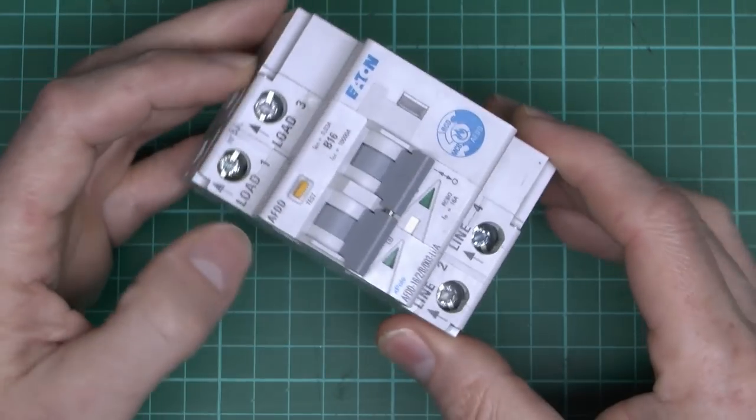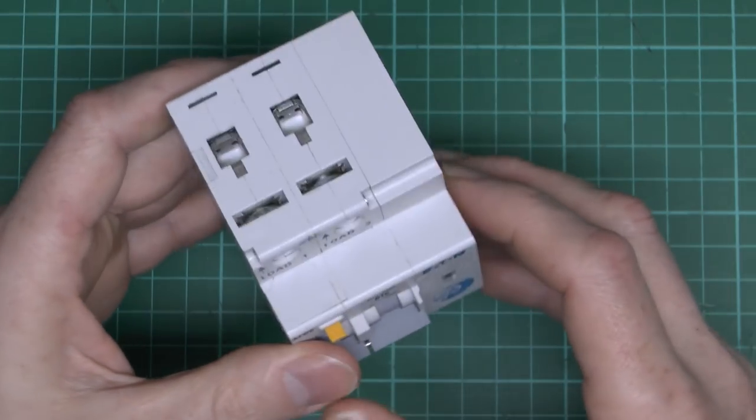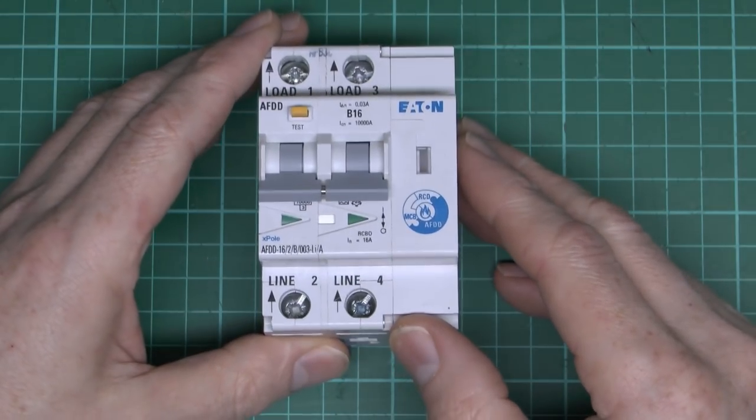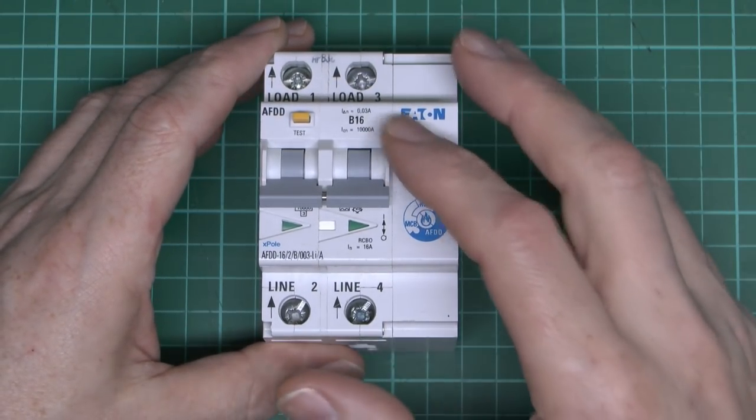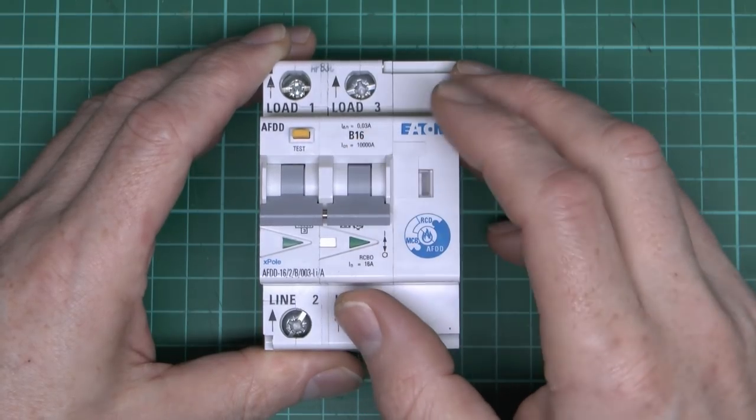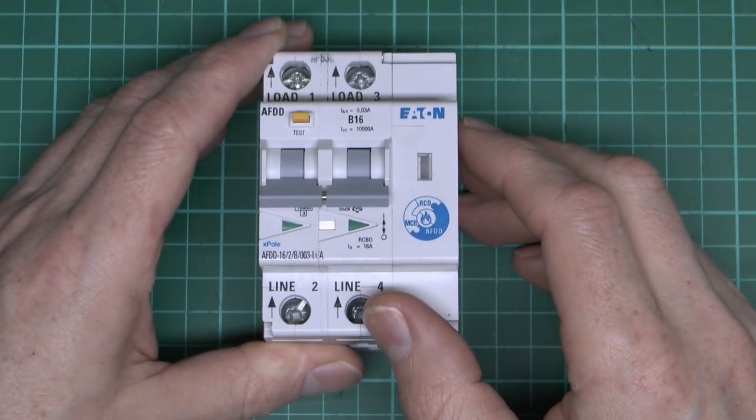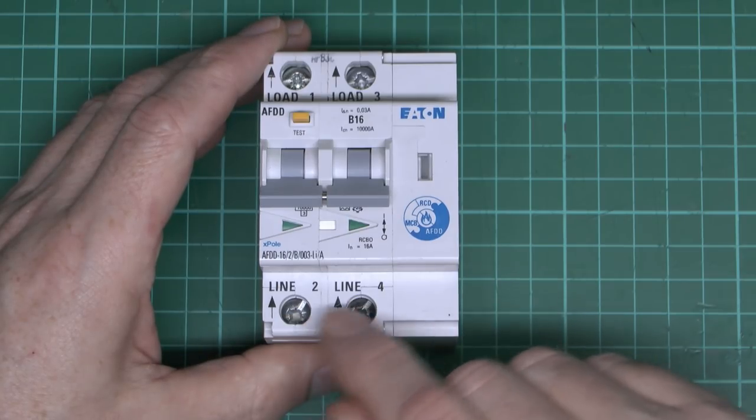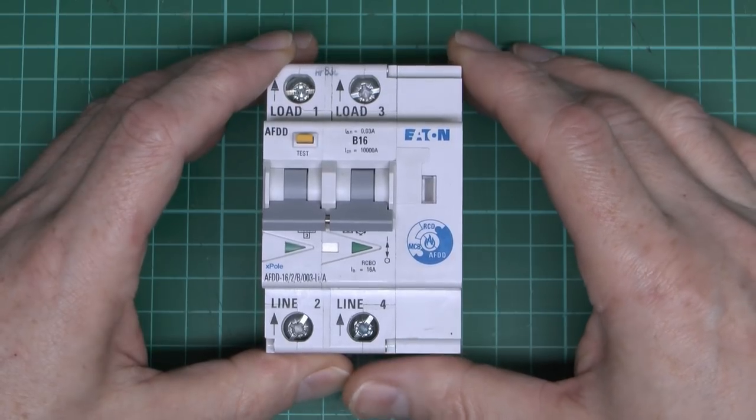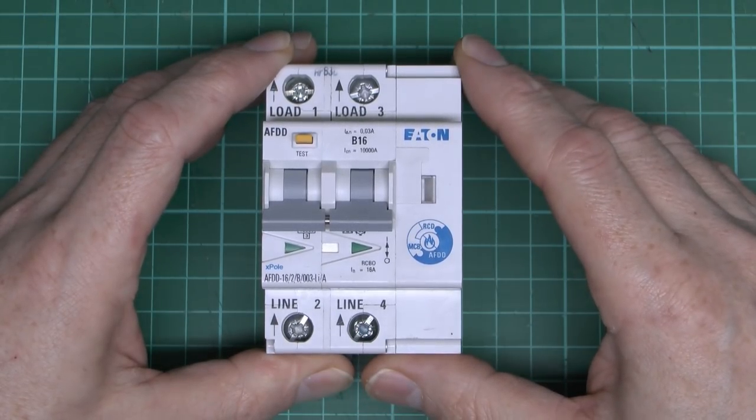Now the first thing about these is it's a very large device, it's a triple width item. It's double pole, but it's basically line and neutral, so a single phase circuit there. So this one we have a 16A device. The RCD current is at 30mA, so again pretty standard there. Just the two terminals at the bottom for the supply, and the two out at the top for the load. So it's just line and neutral.